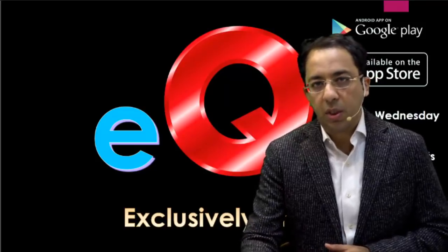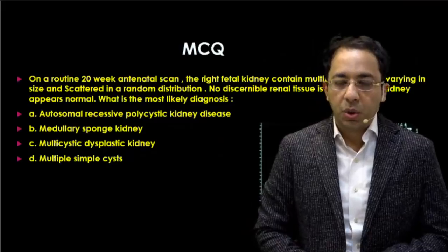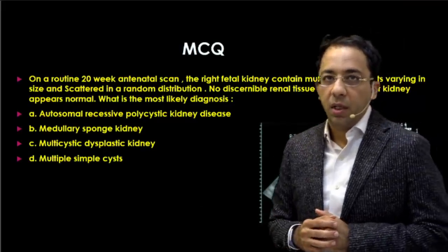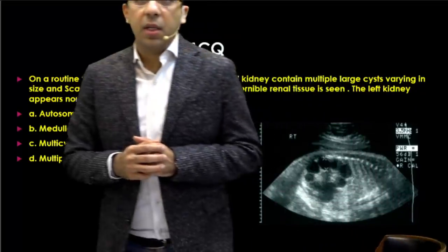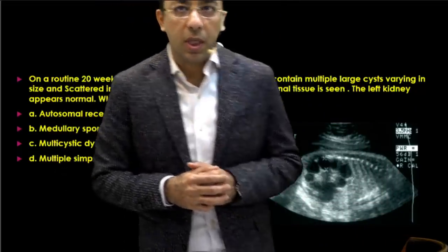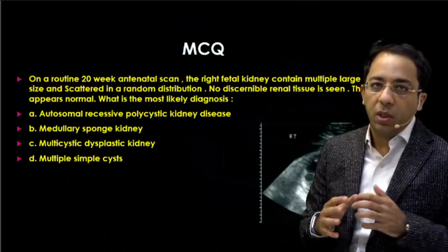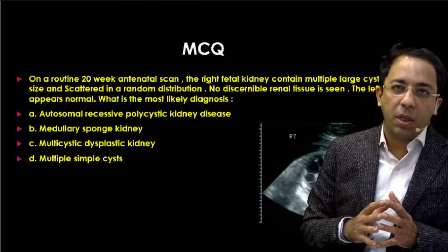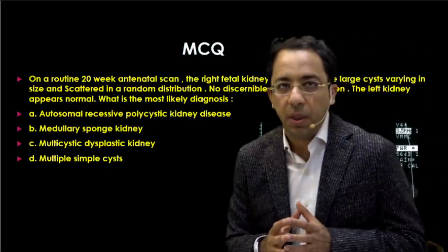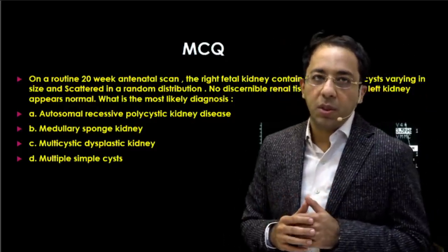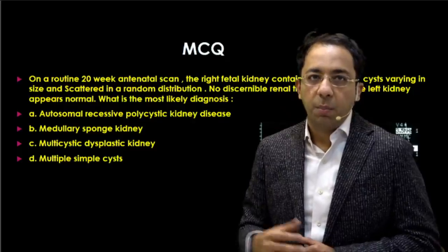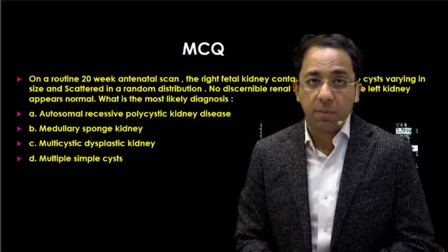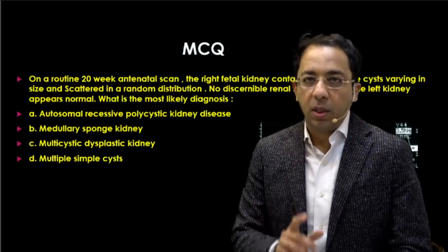Today's radiology MCQ: a 20-week antenatal scan shows the right kidney is enlarged with multiple large cysts of varying size with random distribution. There is no discernible renal tissue. The left kidney appears normal. What is the diagnosis? The choices are ARPCKD, medullary sponge kidney, multicystic dysplastic kidney, or multiple simple cysts.